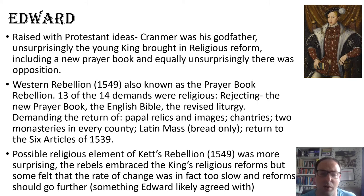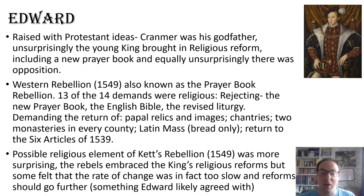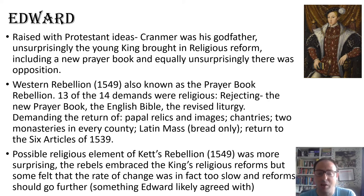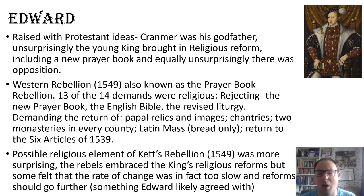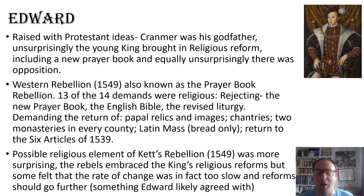They wanted to see a return to the Six Articles of 1539 — an area where Edward had made significant changes. Kett's Rebellion is normally seen as a socioeconomic one, but arguably there is some religious element to it. What is surprising is that they actually seem to have not only fully embraced the king's religious reforms but actually felt the rate of change was too slow and reform should go further. So there were some quite radical Protestants involved in parts of Kett's Rebellion. Their demands for more radical Protestant reform was something Edward would have agreed with, and this partly explains some of the rebels' misplaced faith that Edward was going to take their side rather than crush the rebellion, which is what he did.